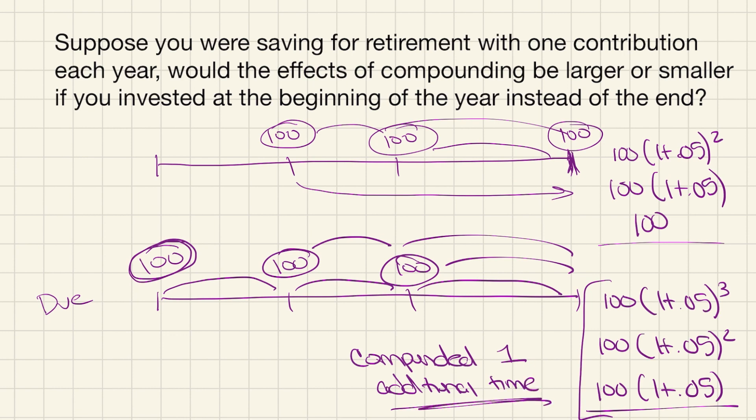So now each one of these cash flows was compounded one additional time. So what that results in is this future value is going to be larger for this annuity due. So the effects of compounding for this one would be larger if we invested at the beginning of each period because each time we're earning that one additional compound.